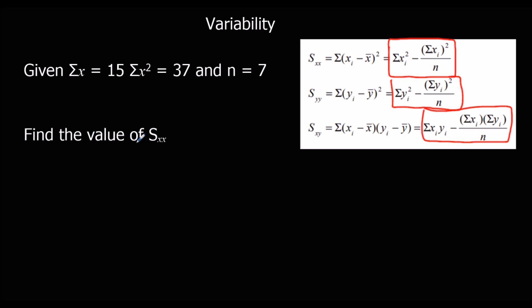So the question says find the value of SXX, and we're given the sum of X, the sum of X squared, and n. We're just going to type these numbers into the calculator. So substitution first: the sum of X squared, which is 37, minus the sum of X, which is 15 squared, divided by how many, divided by 7. So this is how we work out SXX. We just type it into the calculator, and that will give us our answer. And to three significant figures, I've got 4.86.